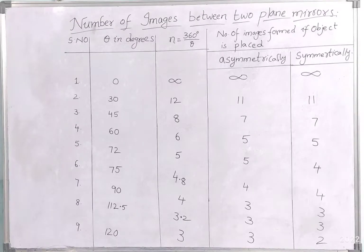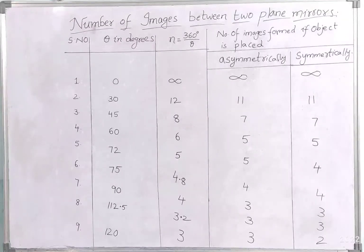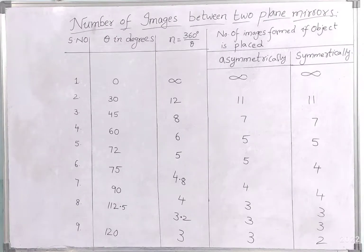In the ninth situation, the angle is 120 degrees. So n = 360/120, which gives 3. When the object is placed asymmetrically, we get 3 images. When placed symmetrically, even though the result is odd, we must do n = 360/theta minus 1, so we get 2 images. This completes the table on the number of images formed between two plane mirrors at various angles.